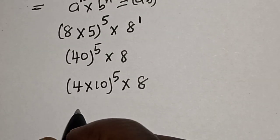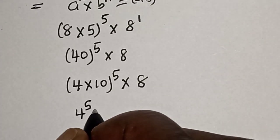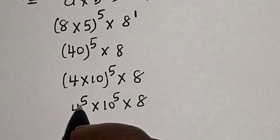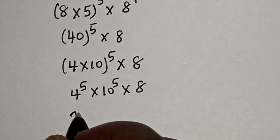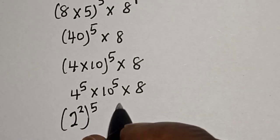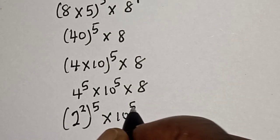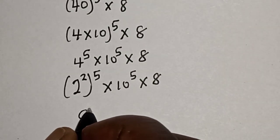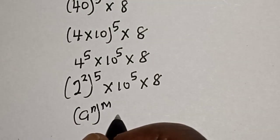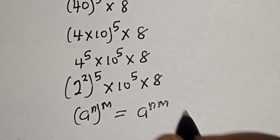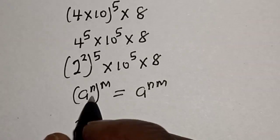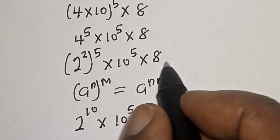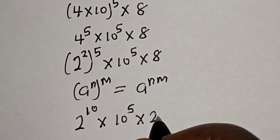Then 40 is 4 multiplied by 10, raised to power 5, multiplied by 8. If we expand this bracket, we have 4 raised to power 5. Now 4 raised to power 5 can be written as 2 raised to power 2, raised to power 5, multiplied by 10 raised to power 5. Then 8 can be written as 2 raised to power 3. Applying the rule (a raised to power n) raised to power m equals a raised to power n times m, this gives 2 raised to power 10, multiplied by 10 raised to power 5, then multiplied by 2 raised to power 3.